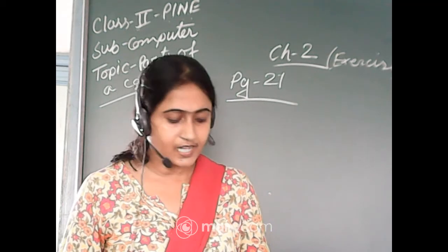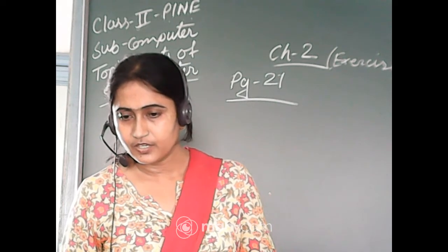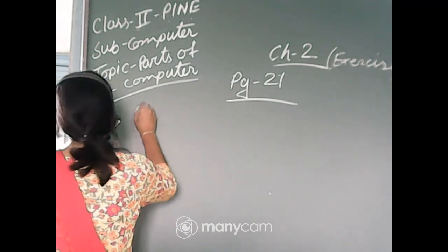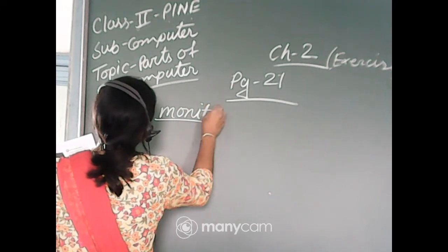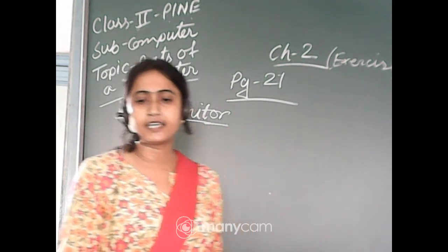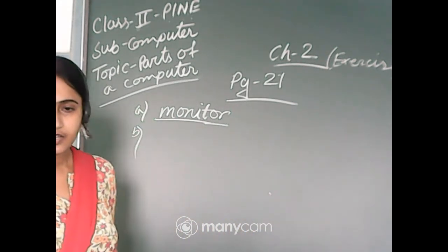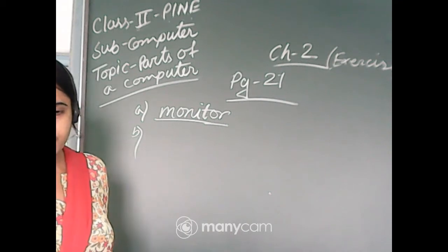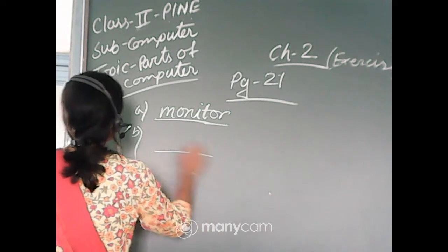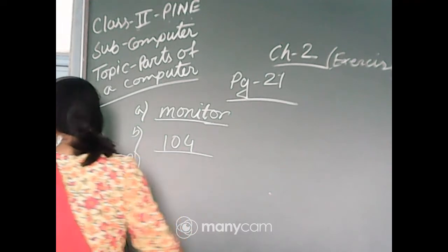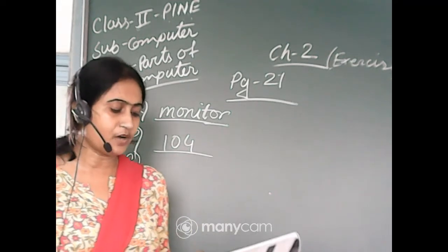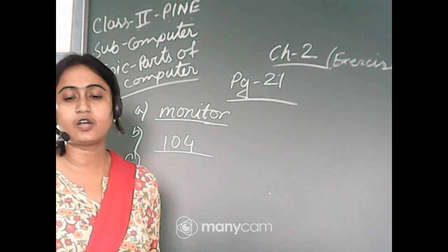Write down the answer. Very good, Reza and Oshmi. A monitor displays information in the form of text. Number A: Monitor — M-O-N-I-T-O-R. Number B: a keyboard has dash keys. Very good, Reza, Potushna, Auditro, Oshmi — 104 keys. A keyboard has 104 keys. Number C: a dash has two buttons and a scrolling wheel. Very good, Potushna. A mouse has two buttons and a scrolling wheel.